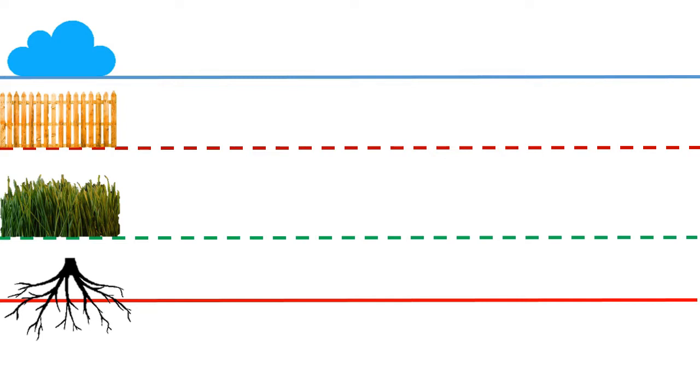First line is skyline. Second line is fence line. The third line is grass line. The fourth line is root line.